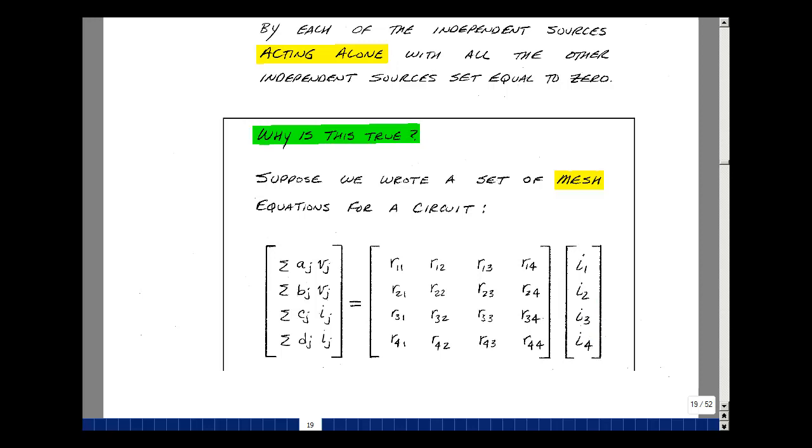And I write a set of equations, and suppose that in mesh one there are just voltage sources. So the voltage sources will show up on the left-hand side of the equation with some relationship between the mesh currents, as we've seen previously. And the voltage sources may show up with a scalar of one or some number multiplying them.